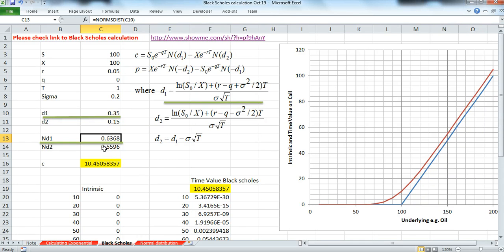Likewise for nd2, d2 we worked out to be 0.15.